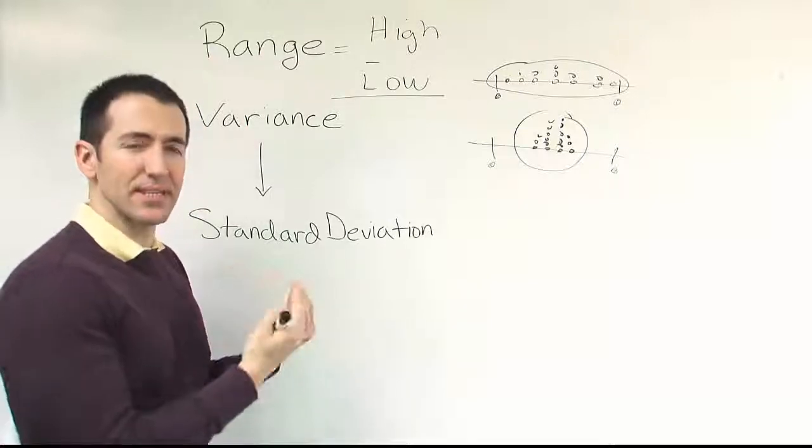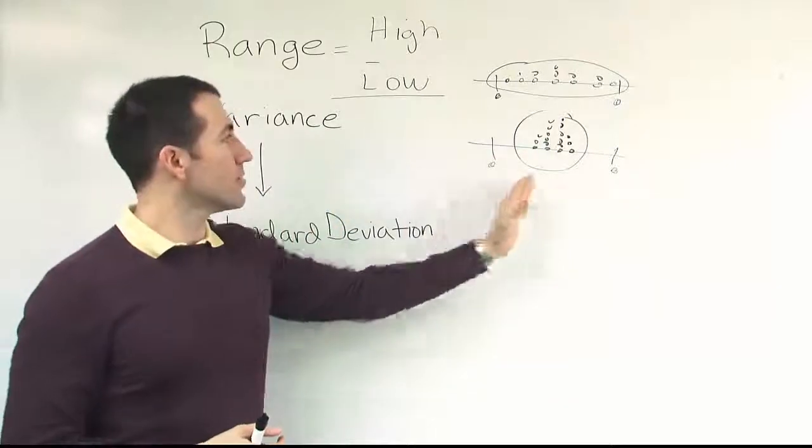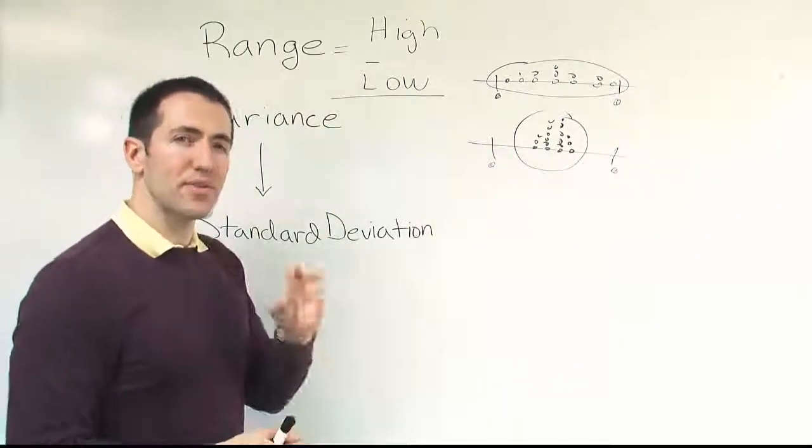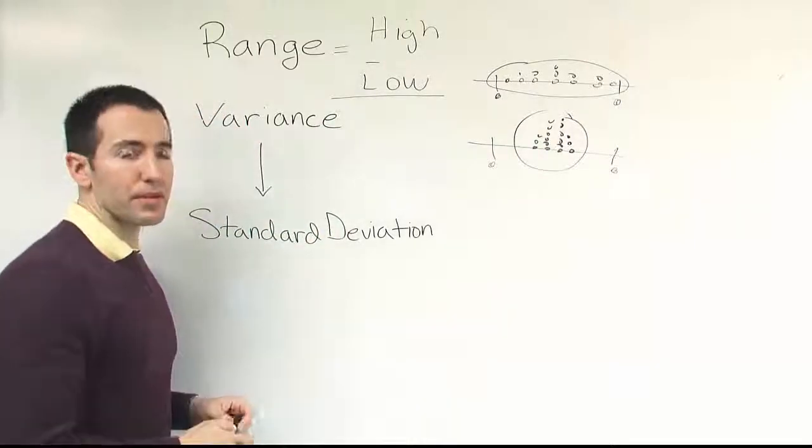It's kind of insensitive. You have lots of different data sets that could have the same range, but look very different in terms of their clustering. And so because of that, the range is probably best used only for a small set of numbers. When you get to larger sets of numbers, we need a better measure. And that's where these two guys come in.